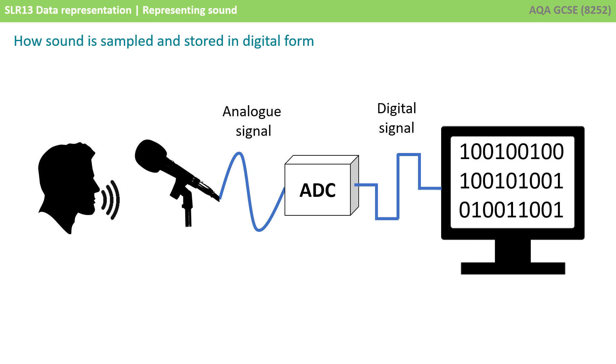We can visualize sound as an analog wave, and to store the sound in binary we need to convert what is an analog signal into a digital binary one. This process is called analog to digital conversion.